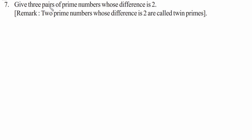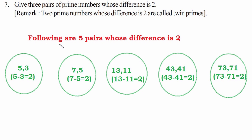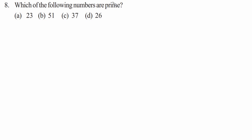Question seven: give three pairs of prime numbers whose difference is two. Two prime numbers whose difference is two are called twin primes. The pairs are: 3 and 5, 5 and 7, 11 and 13, 41 and 43, and 71 and 73 — each with a difference of two.